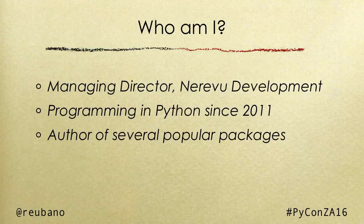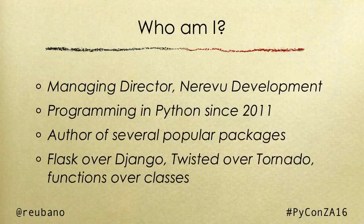Another one is called Meza, which is a data analysis library, and I'll be giving a workshop on that tomorrow. Third one is called Pi-Go-Go. It's a library used under the hood in the two previous libraries. And just to give you an idea of some of my preferences: I prefer Flask over Django, Twisted over Tornado, and functions over classes.